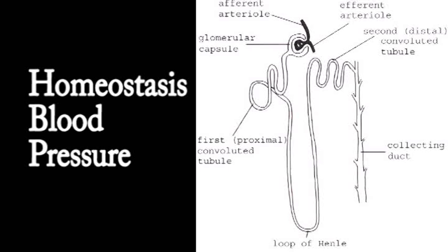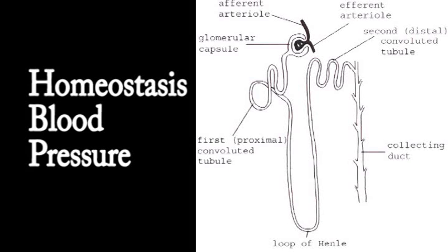It's very important that blood pressure is controlled. If the blood pressure goes too high, this is called hypertension — high blood pressure. If the blood pressure goes too low, this is called hypotension — low blood pressure. Both of these are abnormal states and are problematic because both conditions can lead to damage to the tissues of the body.